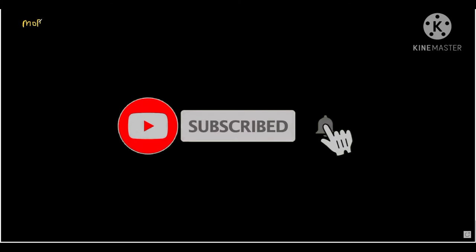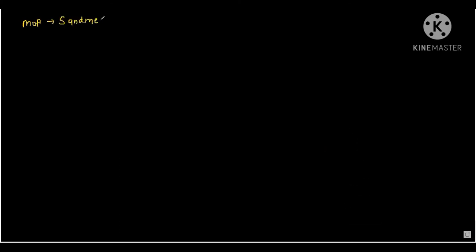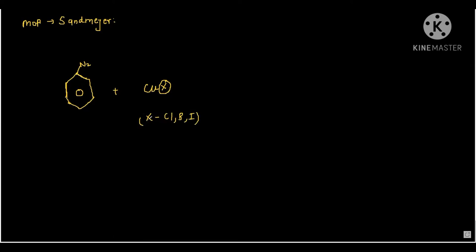Now we are going to discuss the mechanism of the Sandmeyer reaction. So we have a diazonium salt — let's draw it. We know that it has an N₂ group. The diazonium salt is going to react with copper, where X is a halide — X can be chlorine, bromine, or iodide.